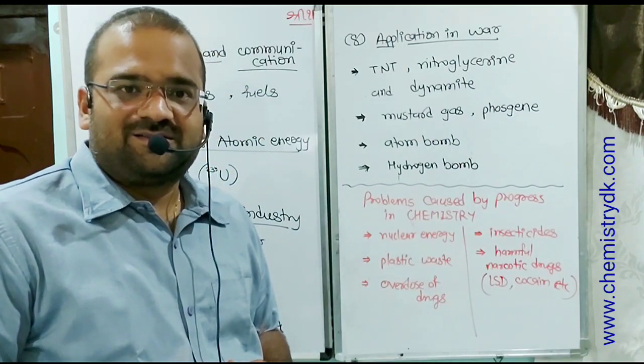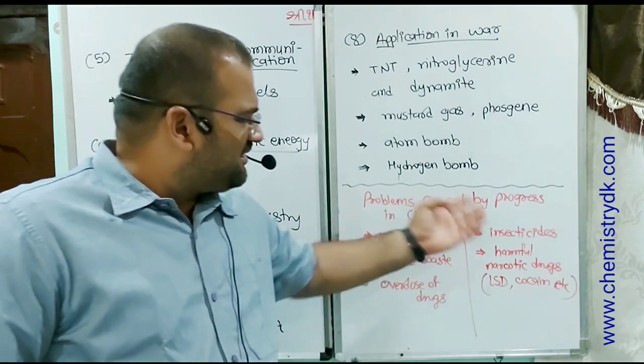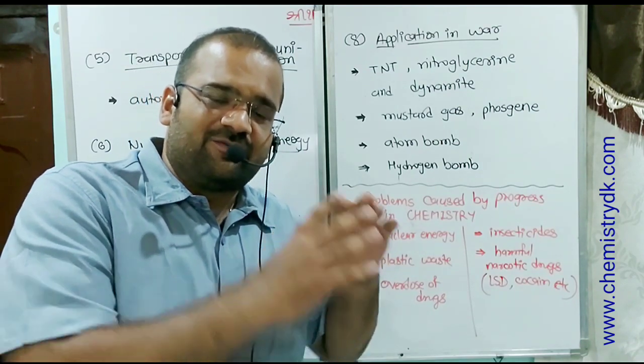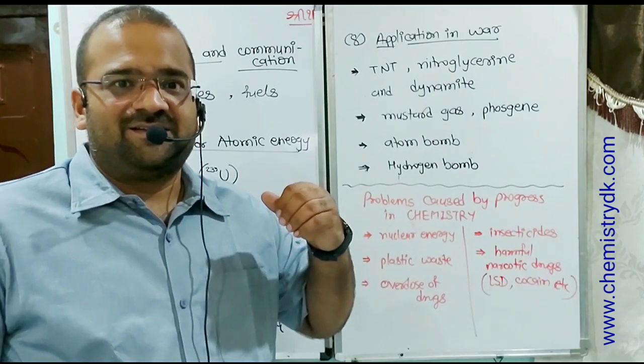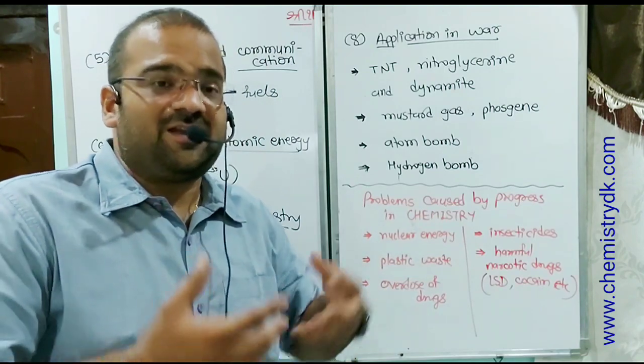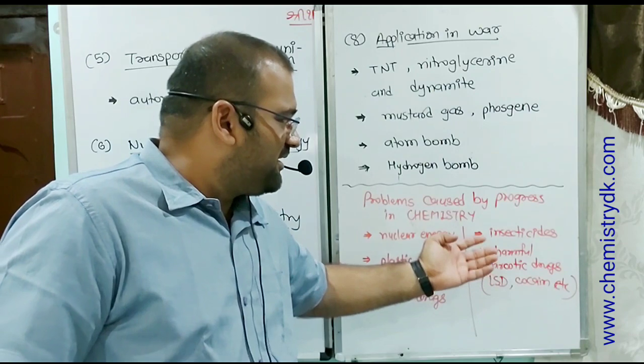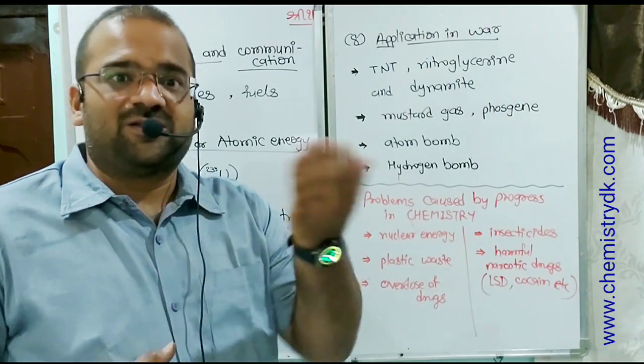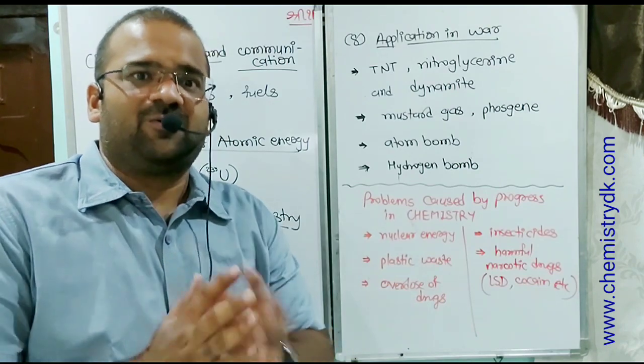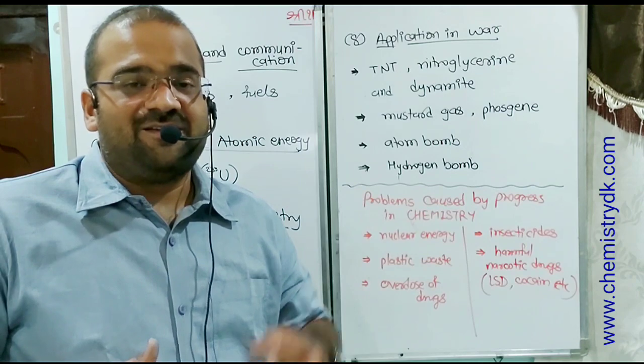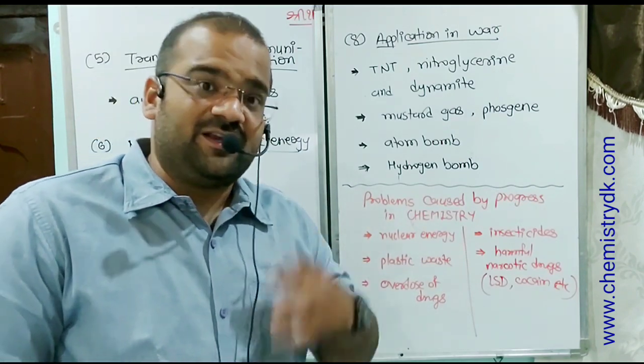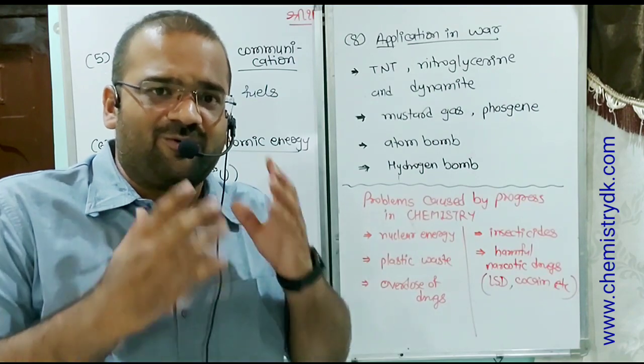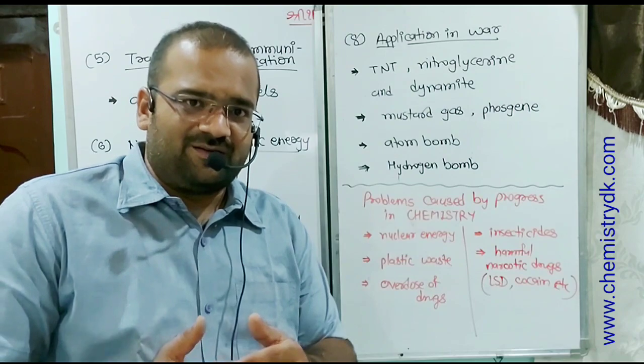Overdose of drugs. Insecticides, insecticides are useful to protect our crops, but they also lower the standard of food and affect the fishes, different animals, and also human body. Harmful narcotic drugs. These all are problems caused by chemistry also. So this is the two sides of coin. At the conclusion, we have to develop such kind of chemistry which is not harmful and which is environment friendly, and such kind of chemistry is known as green chemistry. So we are going to develop in next few years green chemistry. Before that, we have to learn in a systematic way. So let's begin with a new topic.